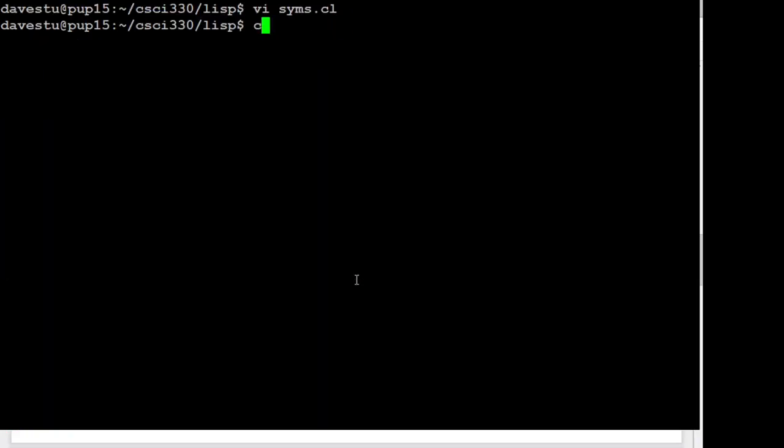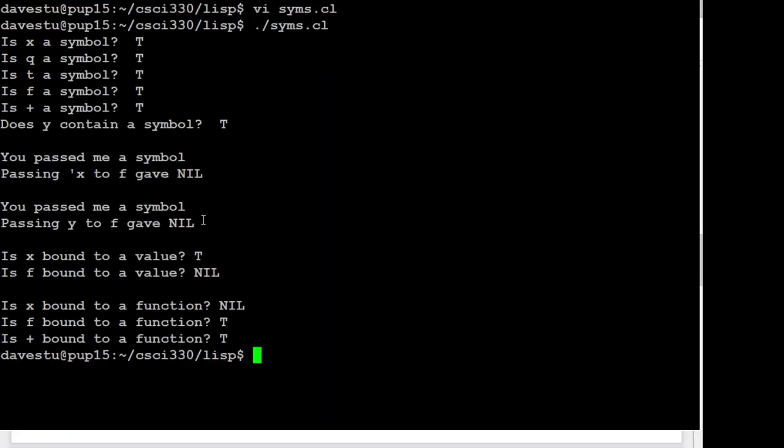It's going through asking, is x a symbol? Yes. Is q a symbol? Yes. Is t a symbol? Yes. Is f a symbol? Yes. Is plus a symbol? Yes. Does y contain a symbol? It contained the symbol x, so yes. We pass x to f and it says, you passed me a symbol. The nil is coming from the return value of the format statement. Passing quote x passes a symbol. Y contained the symbol x, so when we passed y to f, that worked out too. It says that x is bound to a value - that was our defvar 3. Is f bound to a value? No, because it's a function. Is x bound to a function? Nope. Is f bound to a function? Yes. And is plus bound to a function? Yes. Things actually worked out.